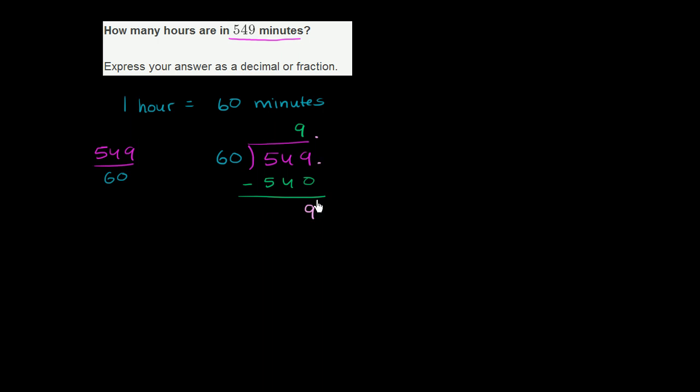So let's put a decimal place right over here. And let's throw some zeros over there. Let's bring down a zero. 60 goes into 90 one time. 1 times 60 is 60. And we subtract. We get 30.